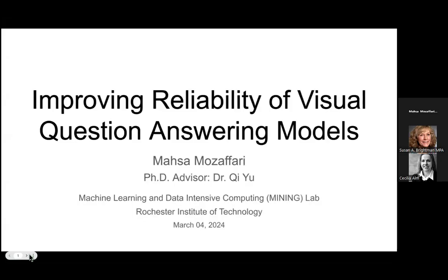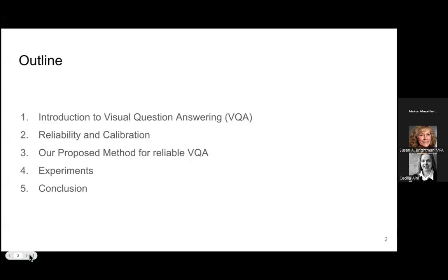This talk presents research on improving the reliability of visual question answering models. We address the challenge of reliability in VQA models, aiming to obtain not only accurate, but also reliable and trustworthy models. The talk will cover a brief introduction to VQA, the problem of reliability and calibration, our proposed method, and results.